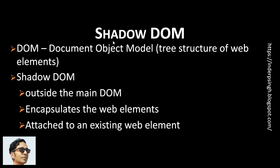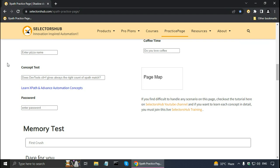Next, Selectors Hub Shadow DOM. The webpage shows a DOM — Document Object Model — which is a tree structure of web elements. Shadow DOM is different: it is outside the main DOM in the webpage and hides or encapsulates the web elements inside it, so those elements are protected. The shadow DOM is attached to an existing web element in the DOM. Selectors Hub can find locators for elements in the shadow DOM, and you can use these locators in Selenium WebDriver or other tools. Note that web elements in shadow DOM cannot be accessed using XPath, but you can use CSS selectors.